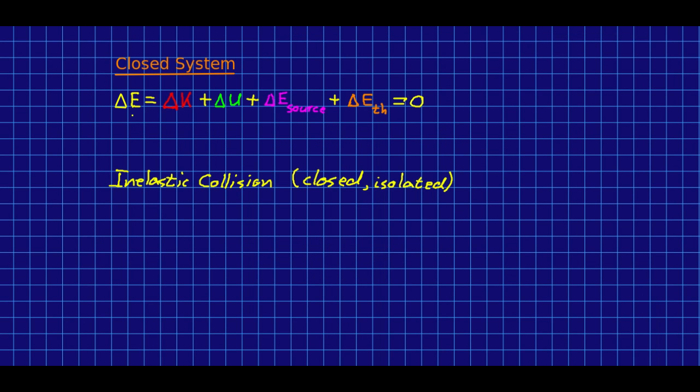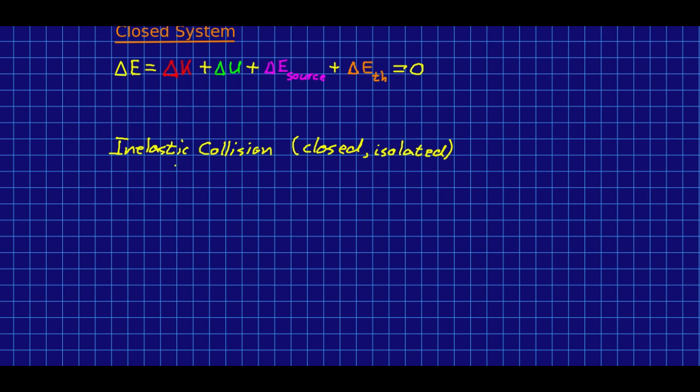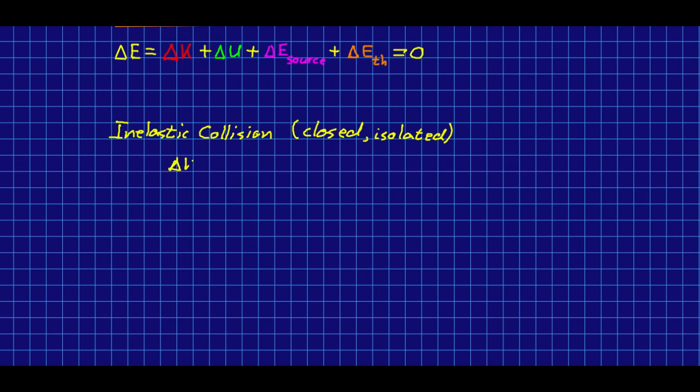So once again, for a closed system, the change in energy is zero, and we can express that as a sum in the different types of energies. Let's specialize that to some different cases. So for example, in an inelastic collision that's closed and isolated, it's inelastic, there will be kinetic energy lost, and that's going to wind up as thermal energy, because this is an irreversible process. We shouldn't be producing any potential energy, and so all we should have is this. Or in other words, that the change in kinetic energy is the negative of the change in thermal energy.